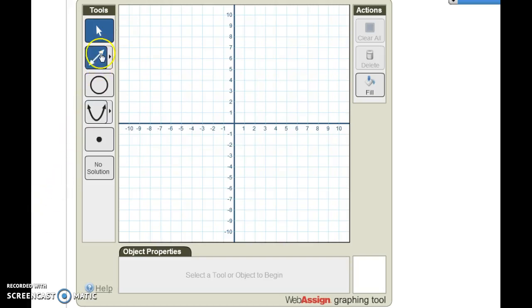To graph in WebAssign, you first need to choose what object you want to graph. You can graph a line, a circle, a parabola, or a single point.